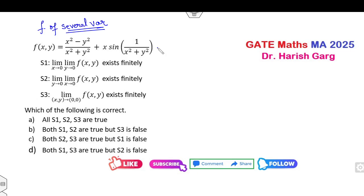If you consider y approaches 0, this value will be 1 plus x sin(1/x²). Now if you take x approaches 0, this part is bounded. So if you take x approaches 0, this will go to 0, so the answer is 1. So that means yes, it exists finitely. So S1 is my correct statement, so c option is cancelled.